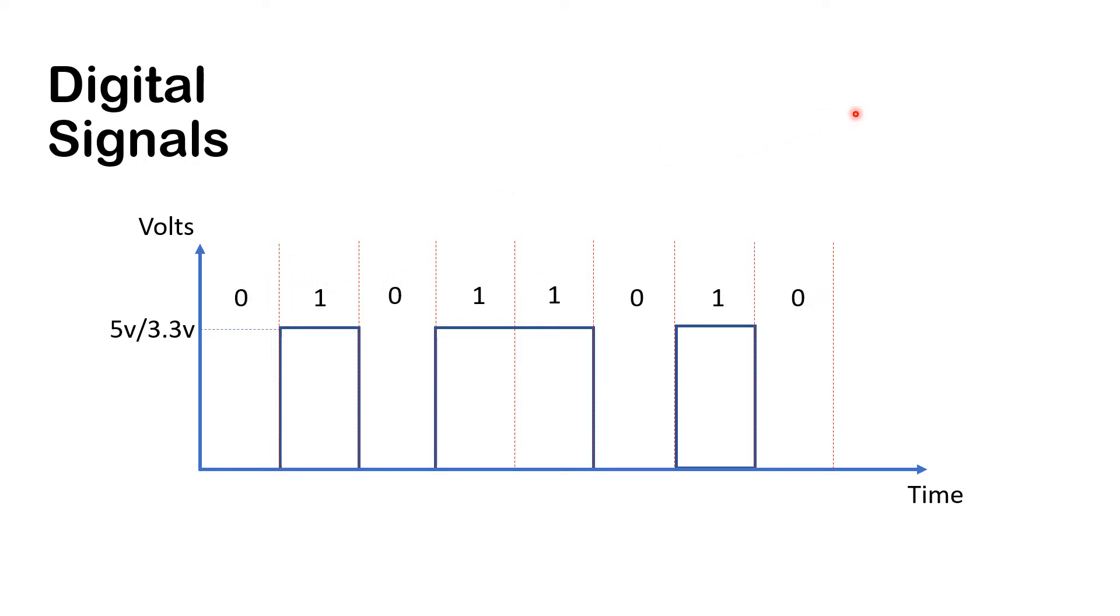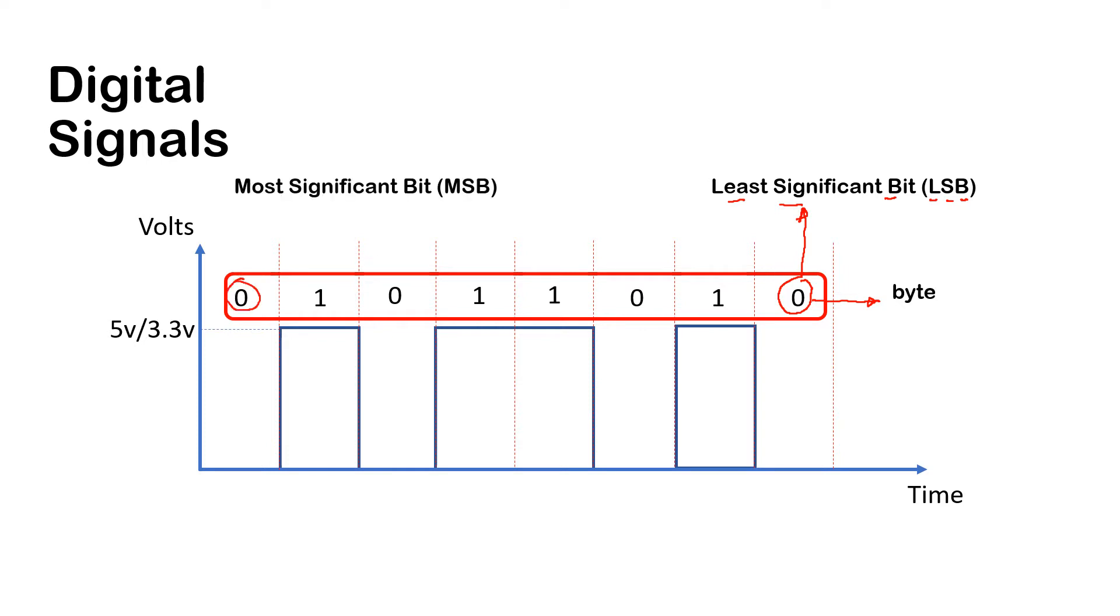Before we get into binary number system, I'd just like to talk about a couple of features from these binary signals. Now I have deliberately chosen 8 bits here. There's a reason: 8 bits is known as a byte. And the rightmost digit here is known as the least significant bit, LSB. And the leftmost bit here is known as the most significant bit, MSB.